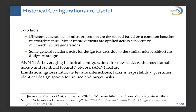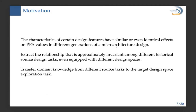A second fact is that some general relationships exist for design features due to the similar microarchitecture design paradigm. A previous work, ANN-TL, leveraged historical data for new tasks with cross-domain mix-up and ANN-based feature extraction, but it ignores feature interactions, lacks interpretability, and presumes identical design spaces for source and target tasks. It is also a process simulation method, not a DSE method. We therefore claim that certain design features have similar or even identical effects on PPA values across different generations, and we want to extract approximately invariant relationships from different historical source tasks — even with different design spaces — and transfer that knowledge to the target DSE task.